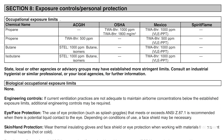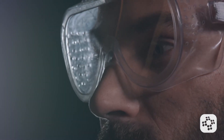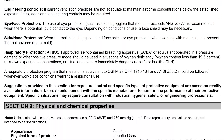Section 8: Exposure Controls and Personal Protection. To keep you safe, this section lists exposure limits and what personal protective equipment, or PPE, you should use, such as thermal insulating gloves or eye and face protection.